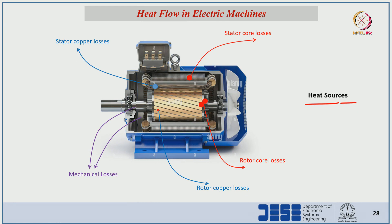The main heat sources are nothing but the loss components. The stator copper loss and stator core loss, rotor copper loss and rotor core loss. Copper losses in the stator and rotor are I-squared-R losses; core losses are hysteresis and eddy current losses; and mechanical losses are friction and windage losses. Mechanical losses occur at the bearing portion and end region, with windage losses arising from rotation of the rotor.